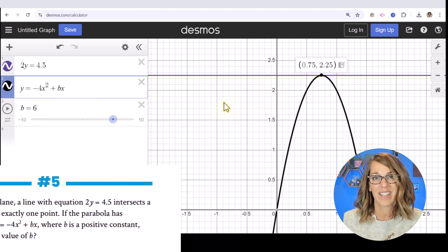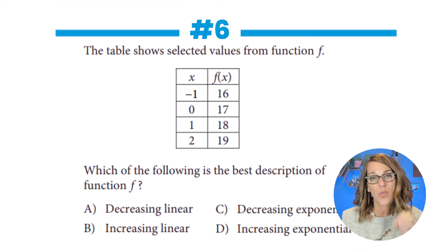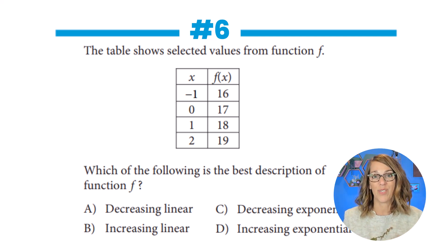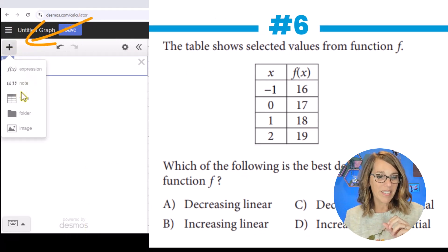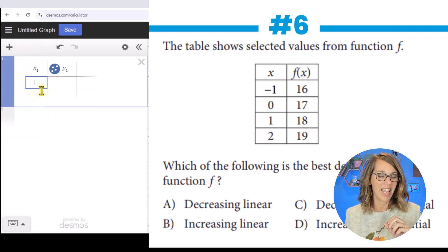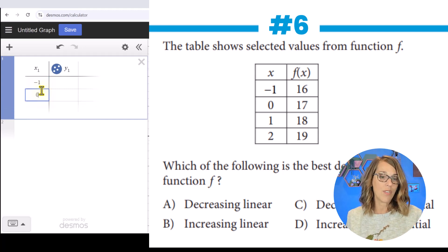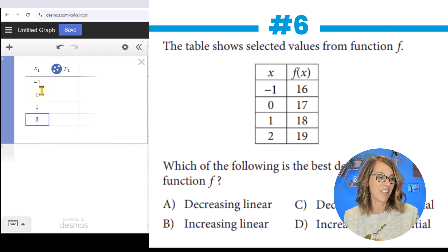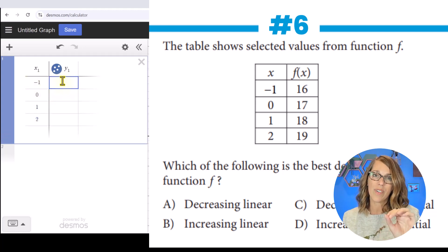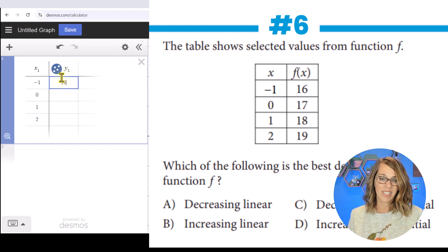If you get to a question like number six and aren't sure how to analyze the behavior, you can type the table directly into Desmos. I'll use the plus button and choose 'Add a Table.' I'll type in my x-values: -1, 0, 1, and 2. Then clicking into the first cell under y, these are my f(x) values: 16, 17, and 19.